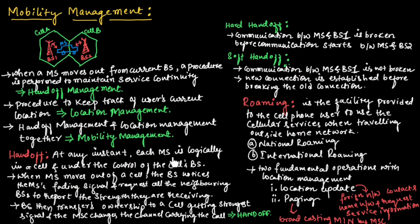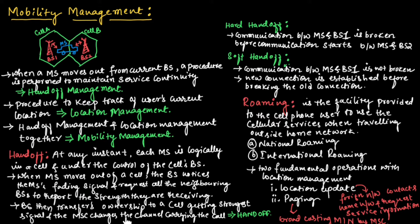At any instant, each mobile station is logically in a cell and under the control of that cell's base station. When a mobile station moves out of a cell, the base station notices the mobile station's fading signal and requests all neighboring base stations to report the signal strength they are receiving. The base station then transfers ownership to the cell getting the strongest signal, and the mobile switching center changes the channel carrying the call. This process is known as handoff.